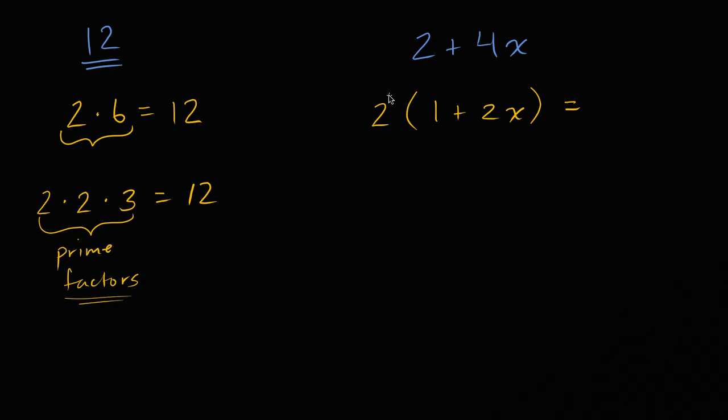Two times, we're just gonna distribute the two, two times one is two, two times 2x is equal to 4x. So, plus 4x. And so, in our algebra brains, this will often be viewed as or referred to as this expression factored or in a factored form. And in this case, sometimes people would say that we have factored out the two. But you could just as easily say that you have factored out a 1+2x. You've broken this thing up into two of its factors.